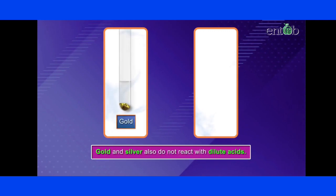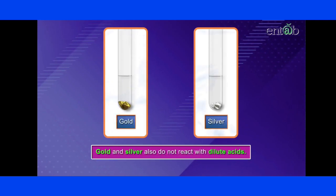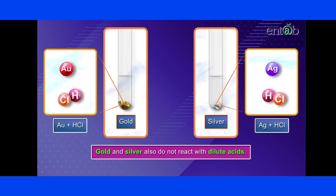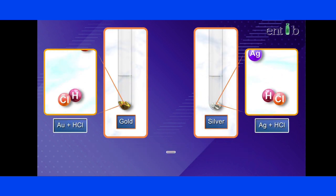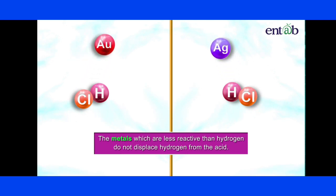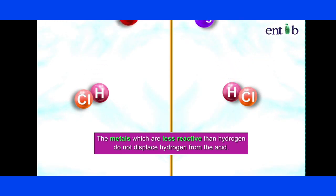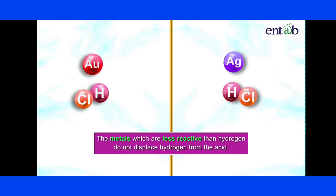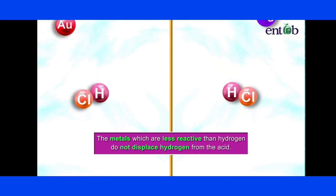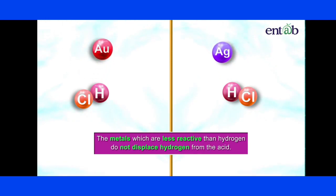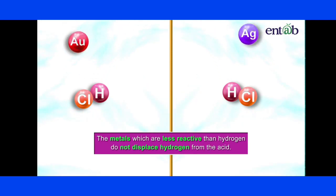Gold and silver also do not react with dilute acids. This is because metals like copper, silver and gold, which are less reactive than hydrogen, do not displace hydrogen from the acid molecule.